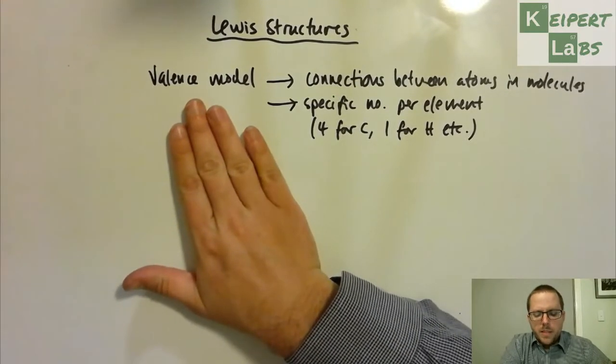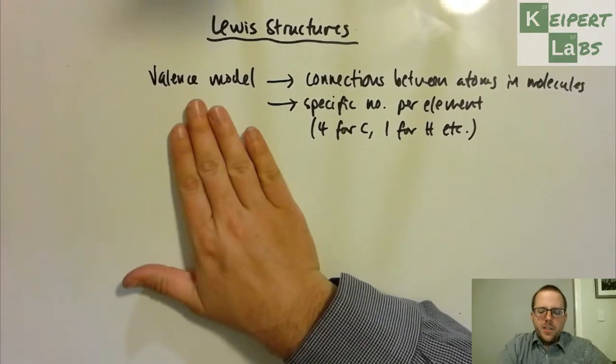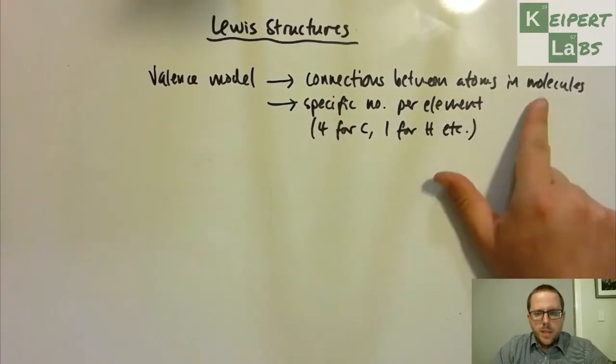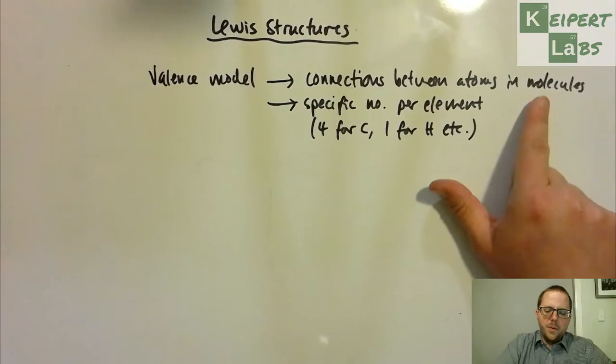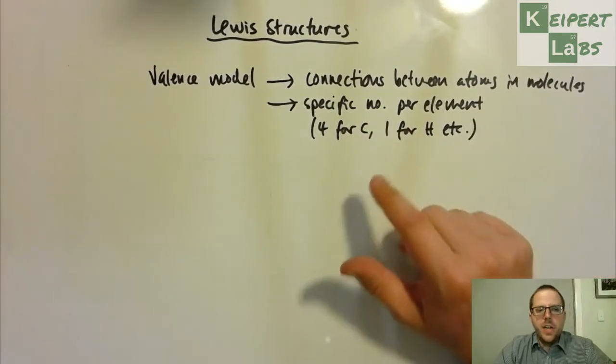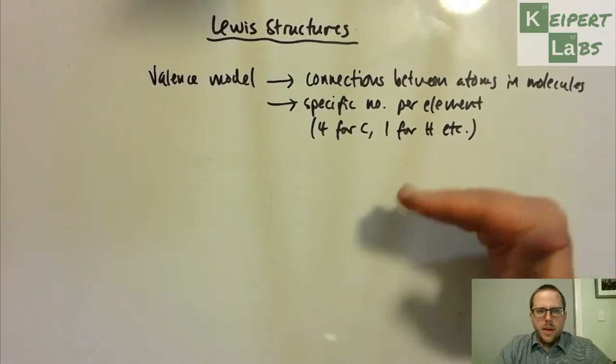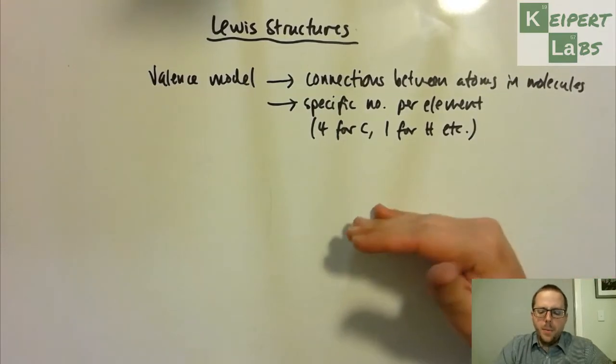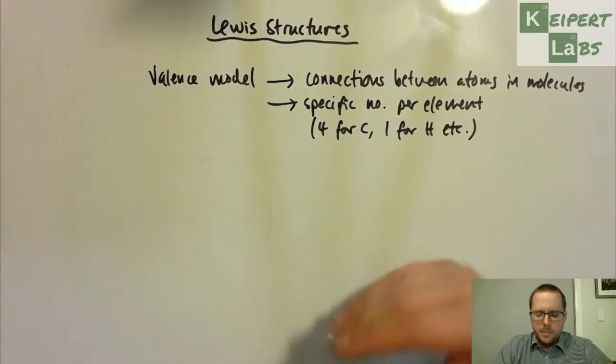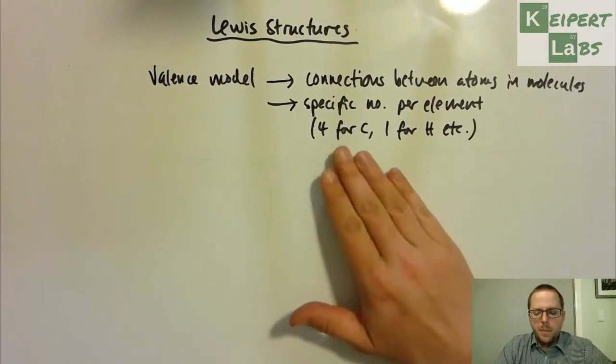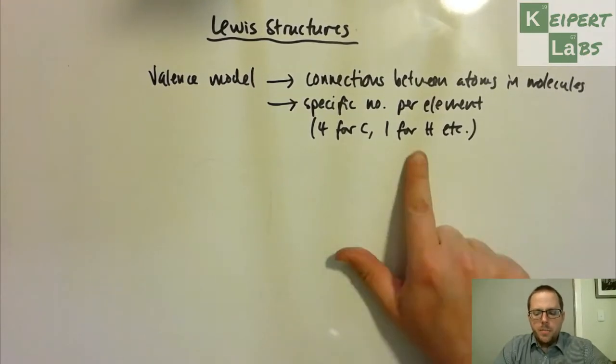We looked at with the valence model that there are connections between atoms in molecules, and then we identified that there were a specific number of connections that each element would make. We started by looking at hydride compounds to help us establish a pattern and then we were able to extend it beyond that. So for example carbon makes four connections, hydrogen makes one connection.